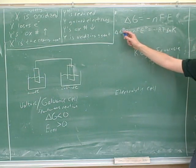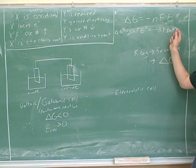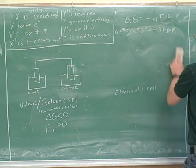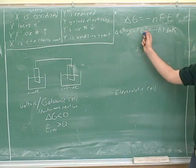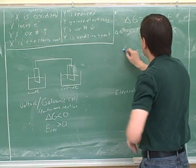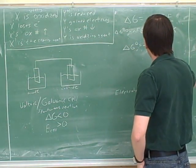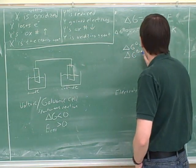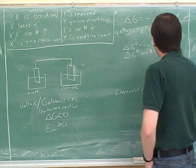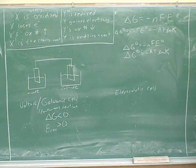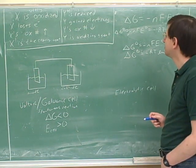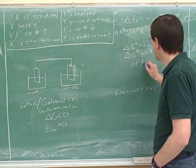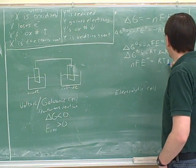All right, so here's one master equation that relates standard delta G, standard cell potential, and equilibrium constant. So these would be good things to have in your notes. So can you see that this is really, what is it, one, two, three equations in one? So if you want to relate delta G and E, here's the equation that relates delta G and E. If you want to relate delta G and K, you would use this equation. And what's the equation that's relating E and K?